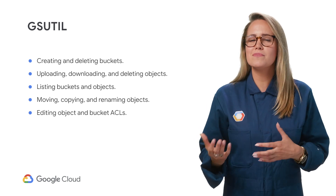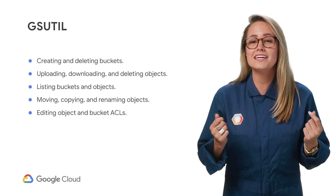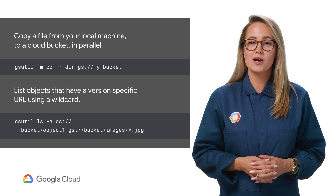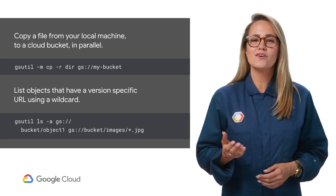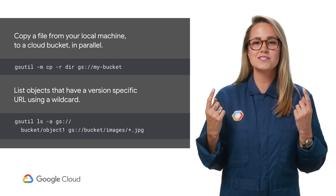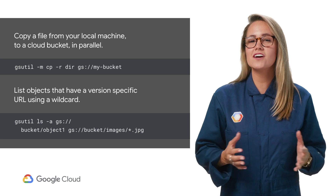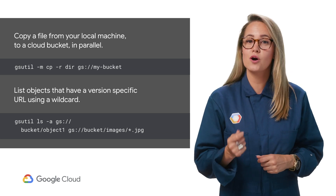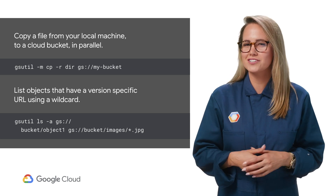gsutil provides you with the ability to do all sorts of things, like creating buckets, moving objects, or even editing metadata. To use it, simply run the gsutil program with a myriad of command line options. For example, this command uploads a directory of files from your local machine to your GCS bucket using parallel upload. And this command lists out specific objects that have a version-specific URL using a wildcard. You can see other cool stuff this tool can do in the documentation linked below.